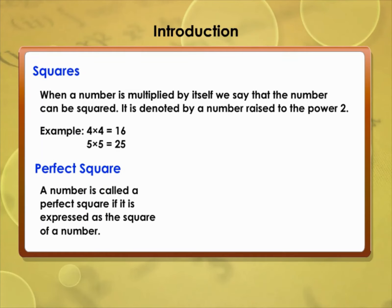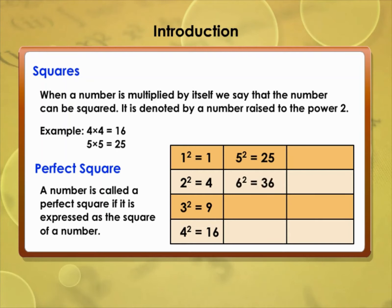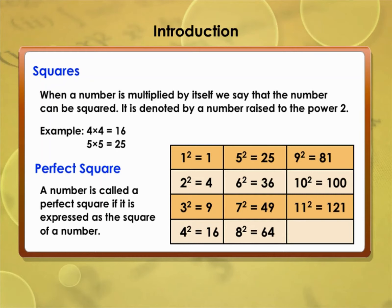Consider the square table: 1² = 1, 2² = 4, 3² = 9, 4² = 16, 5² = 25, 6² = 36, 7² = 49, 8² = 64, 9² = 81, 10² = 100, 11² = 121, 12² = 144.